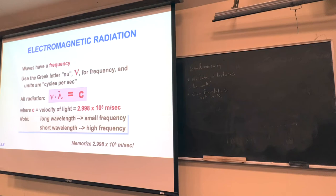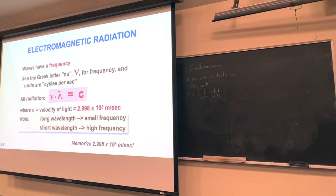That's why longer wavelengths have smaller frequencies, and shorter wavelengths have higher frequencies — as one goes down, the other goes up. If this was a regular class I'd say memorize the speed of light, but in this class I'd absolutely put it on a page of notes for quizzes and exams because it's a number we're going to use a lot. Use the full significant figure value — don't use 3.00, it will get you in trouble.